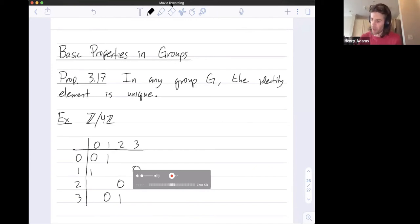2 plus 3 is 5, which mod 4 is 1. Here are the things that add up to 2. And finally, here are the things that add up to 2.